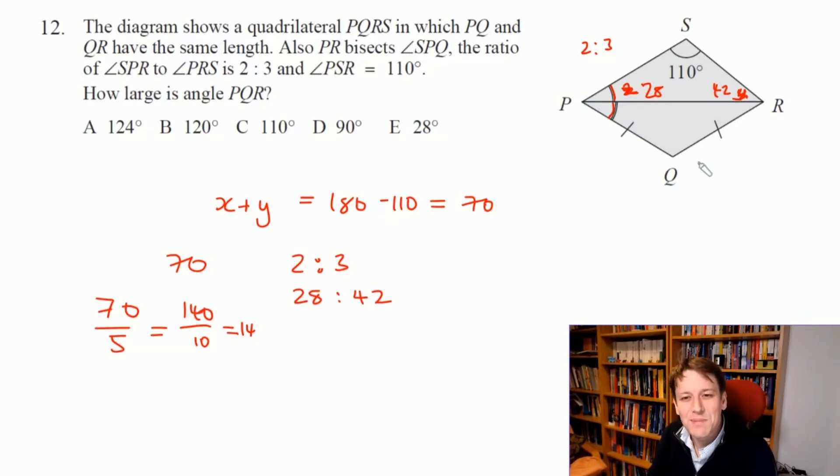We're also told that this is an isosceles triangle, we've got these two lengths being the same. PQR is isosceles, so that means this angle is also 28.